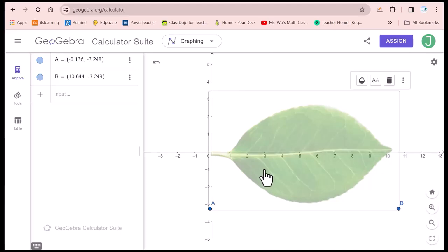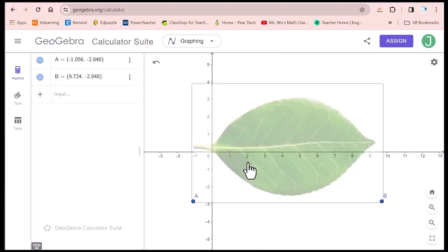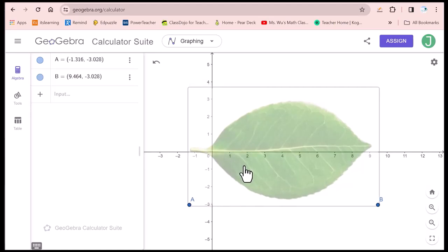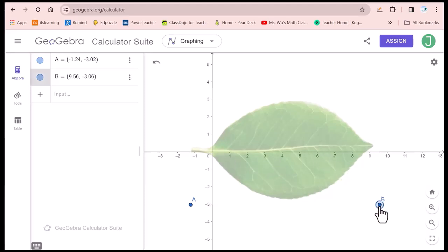Move the picture around to find a good position for this image. Set the middle as 0,0. Then you can move this. Put this end on the X axis.